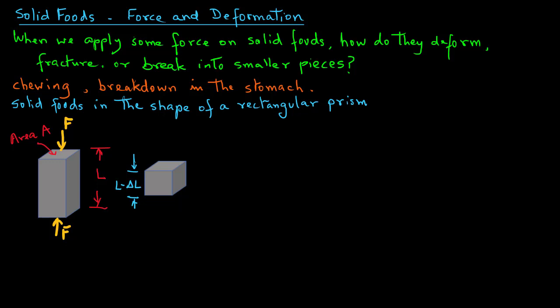In this case we are applying force only along one axis so we call this uniaxial compression and the height decreases to L minus delta L. Delta L is the deformation that took place when we applied force to this solid prism.